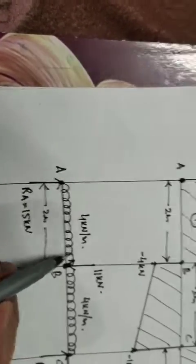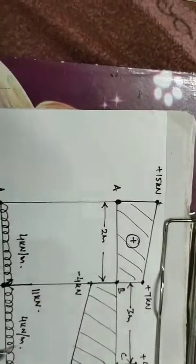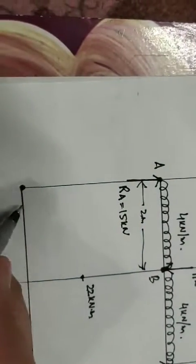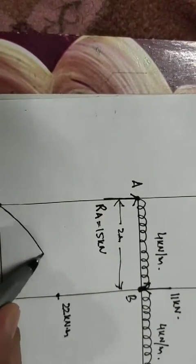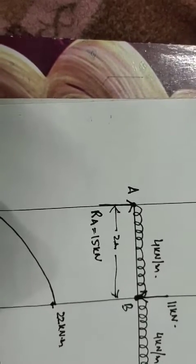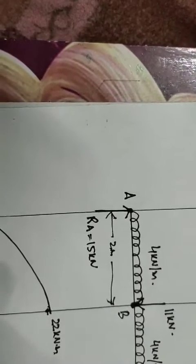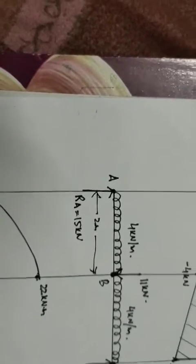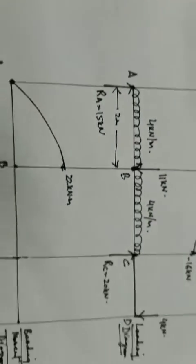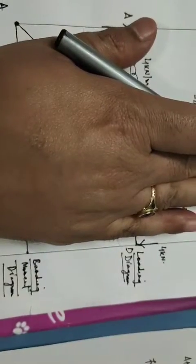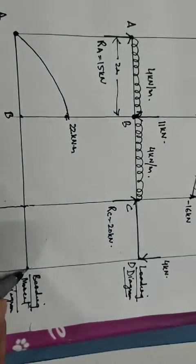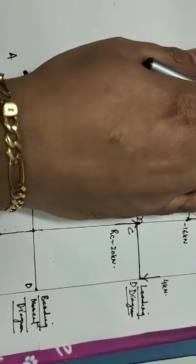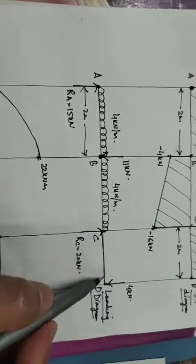Since there is a UDL from A to B, the shear force diagram is inclined, so the bending moment diagram from A to B will be a curve line. Now considering the right hand side of the beam, bending moment at point D is 0. We now find the bending moment at C.